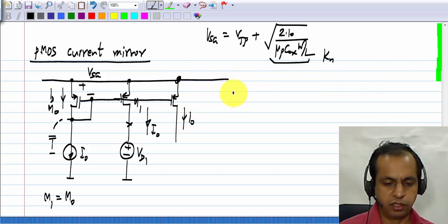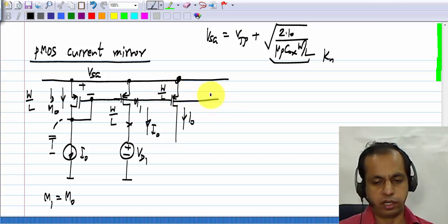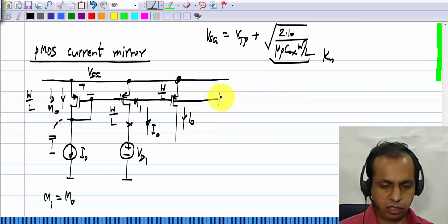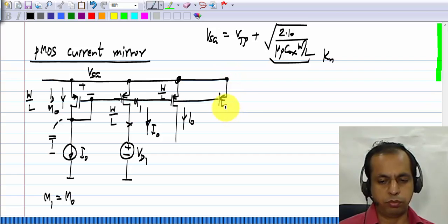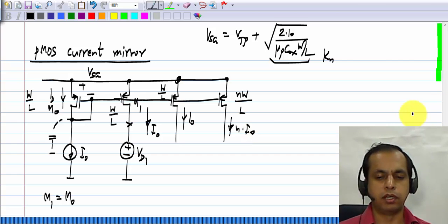Let us say all these transistors have a width W and a length L, then they will have a current I naught. And if you make a transistor of width N W and the length L, it will have a current of N times I naught. So, you can also have a multiple of the current that you started with. This is how you realize current sources of a variety of values.